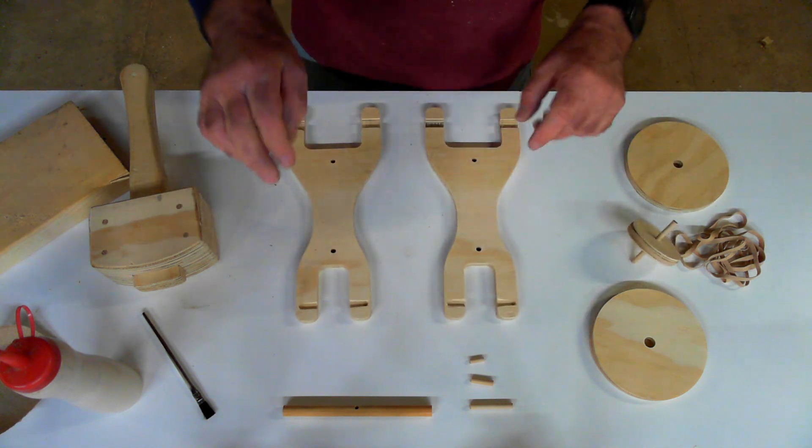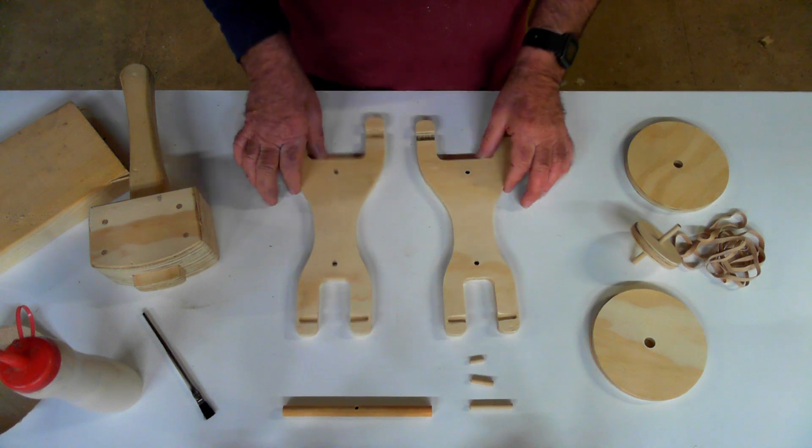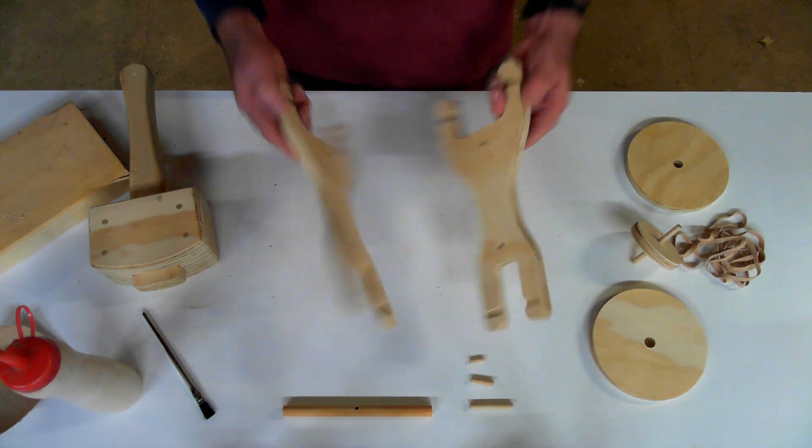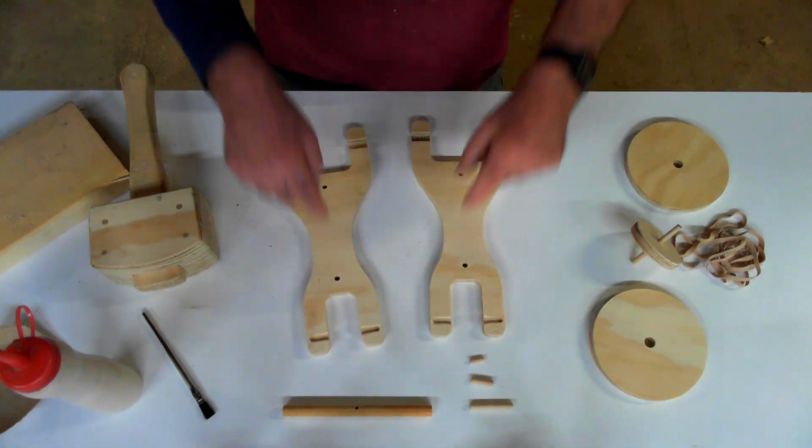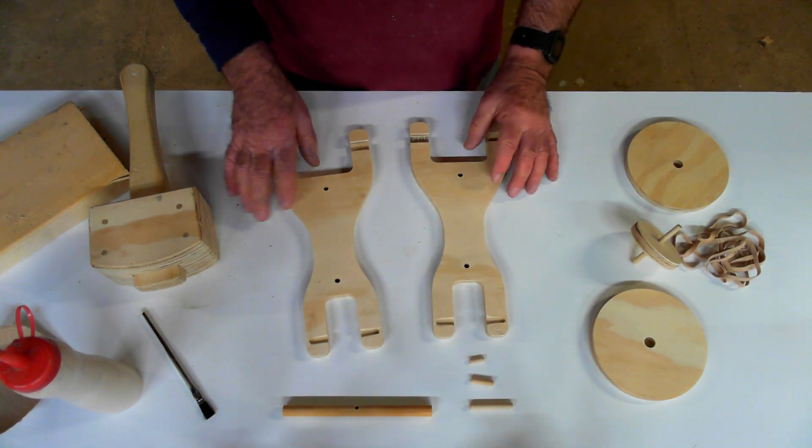So now we're going to put glue in the two halves together. So these two halves have one side that doesn't have grooves in it and one side that does. And those grooves go together. They're the inside pieces.